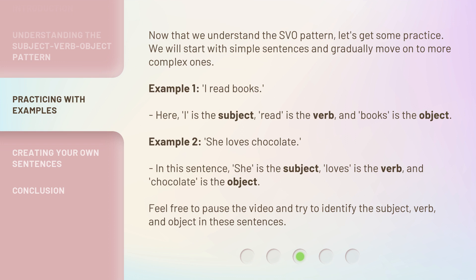Example 2: 'She loves chocolate.' In this sentence, she is the subject, loves is the verb, and chocolate is the object. Feel free to pause the video and try to identify the subject, verb, and object in these sentences.